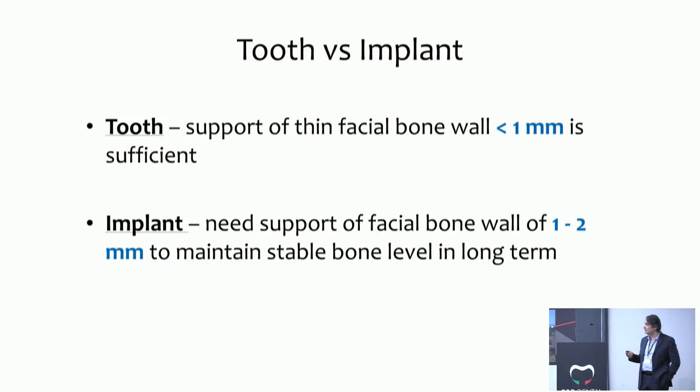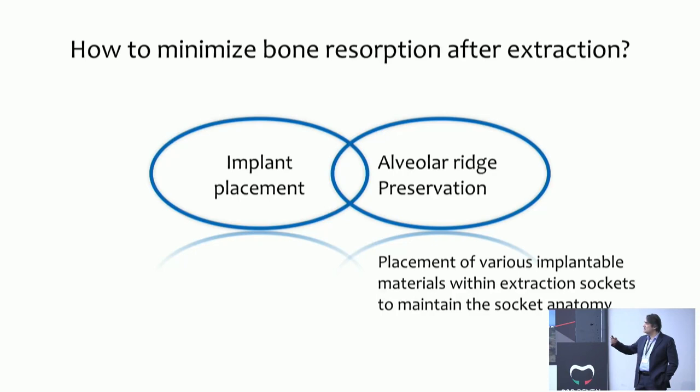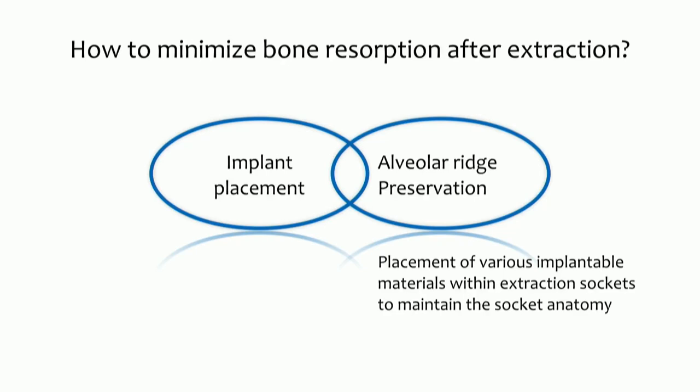To conclude this part: if we have a thin facial bone wall thinner than 1 mm, it is enough for a natural tooth but not for an implant — we need at least 2 mm from the buccal side. How can we minimize bone resorption after extraction? We can either proceed with alveolar preservation or implant placement. However, immediate implant placement alone will not stop resorption. Only when combined with immediate loading can we reduce resorption to some extent.